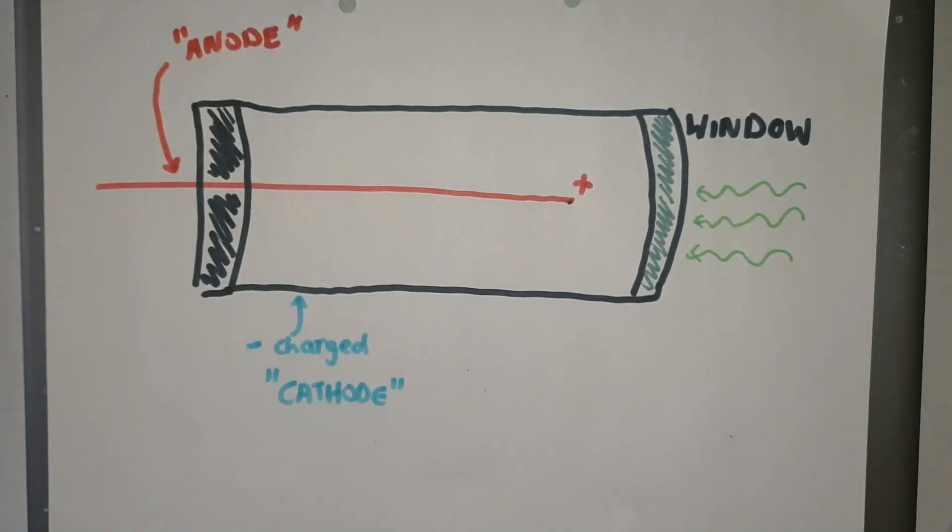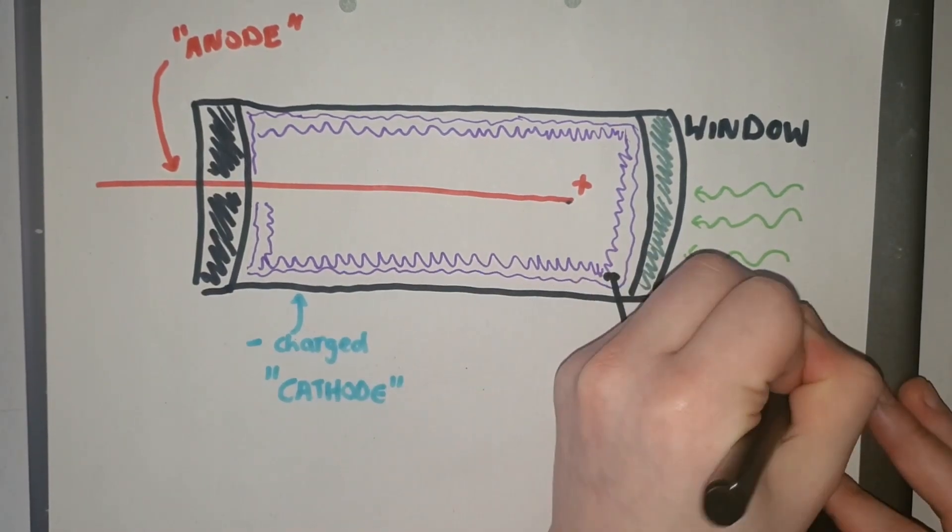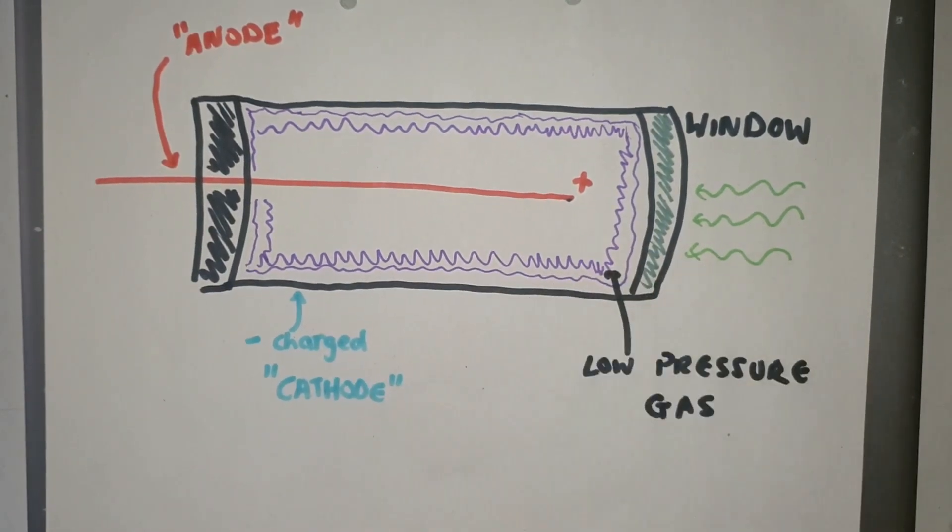The tube is also filled with a low pressure gas and we'll go into more detail about this gas later on in the video. So at the moment we're going to look at how this Geiger-Müller tube detects radiation.